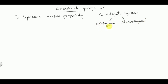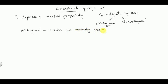In an orthogonal coordinate system, the axes are mutually perpendicular to each other. In a non-orthogonal coordinate system, the axes are not mutually perpendicular to each other. Generally, we prefer the orthogonal coordinate system.